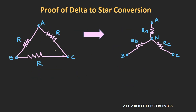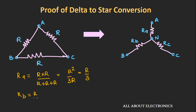Now suppose in this delta network all three resistors are the same value R. Then in the equivalent star network, the value of resistance RA will be R times R divided by R plus R plus R, that is R squared divided by 3R, which equals R by 3. Similarly, we get RB as R by 3 and RC as R by 3. So if all three resistors in the delta network are of the same value R, then in the equivalent star network each resistor will be one-third of the original value, that is R by 3.